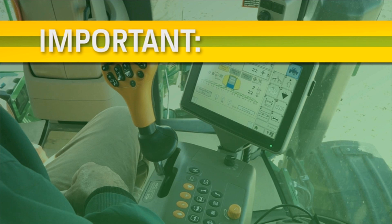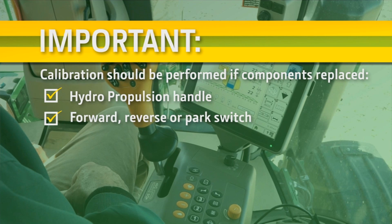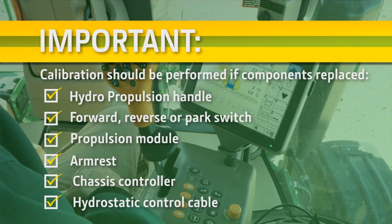Since the multifunction control handle and its travel is critical to proper cruise control engagement, a calibration of the handle may be required occasionally. Calibration should be performed if any of the following components are replaced: the hydro propulsion handle, the forward, reverse, or park switch, the propulsion module, the armrest, the chassis controller, or the hydrostatic control cable.